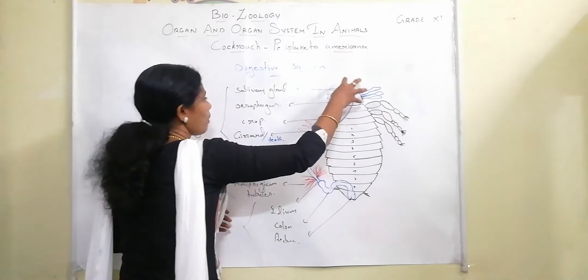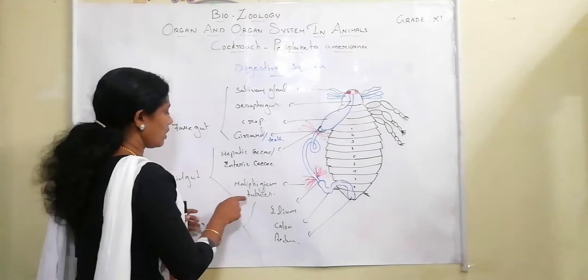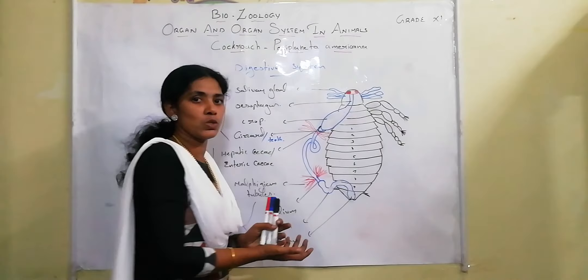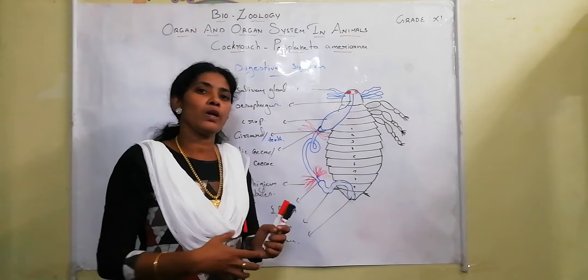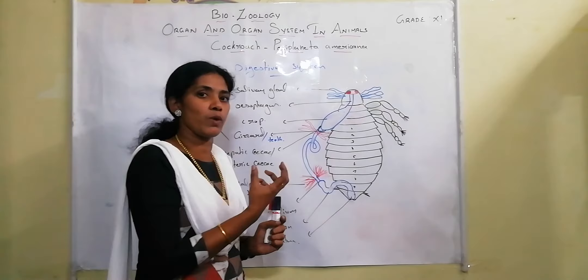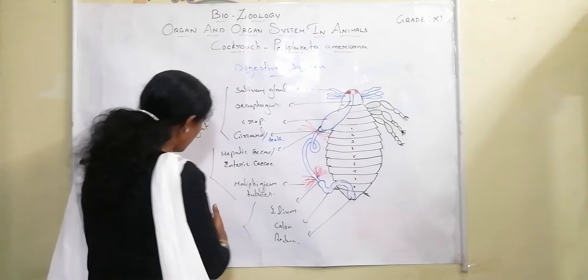The midgut region is glandular in nature, with secretory cells. At the end of the midgut there are Malpighian tubules, which extract waste from the hemolymph. The midgut starts here and ends with the Malpighian tubules. The third division is the hindgut region.